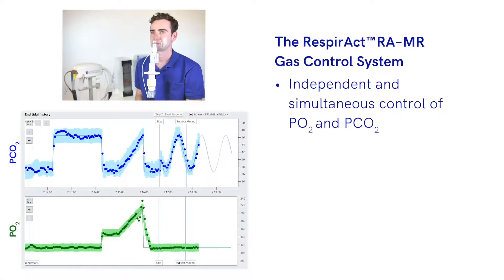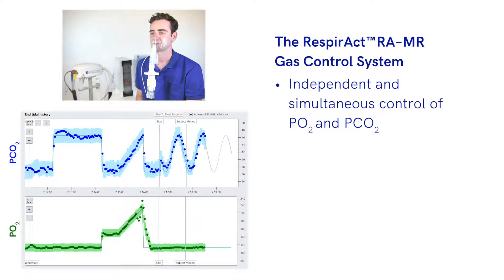The control of the partial pressures of carbon dioxide or oxygen with Respiract is independent from one another. This means that either gas can be manipulated sequentially or simultaneously, resulting in any pattern of stimulus control. This occurs independently of the subject's breathing pattern.